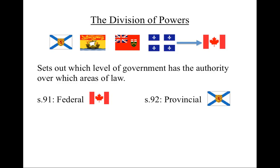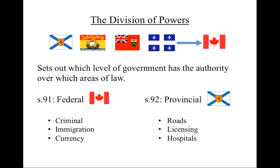For example, the federal government gets to make criminal laws, laws about who gets to come into the country, and laws about our national currency, while the provinces get to make laws about roads, liquor and drivers licensing, and the maintenance of hospitals. This is not a complete list. You can see the complete list by looking up Sections 91 and 92 online.